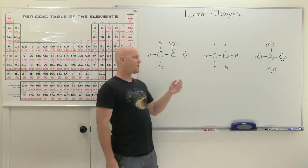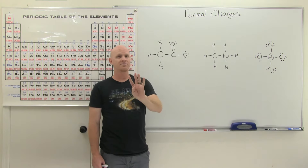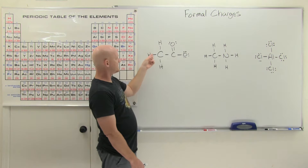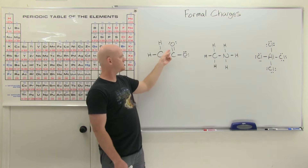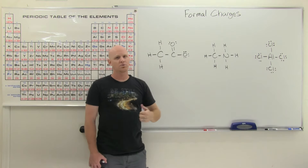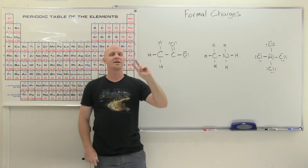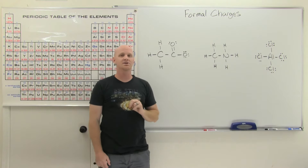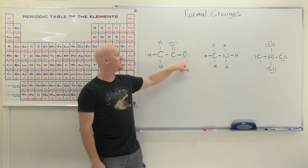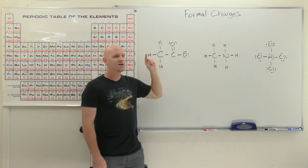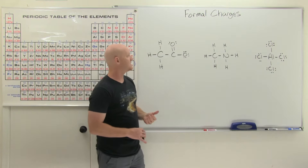Carbon has four valence electrons, so it's four short of a filled octet and typically wants to make four bonds — and making four bonds here, it's not going to have a formal charge. Same thing with this carbon: four bonds, no formal charge. Now oxygen has six valence electrons, two short of a filled octet, so you typically see oxygen making two bonds — like this one right here. But this other oxygen has only one bond, and that should clue you in that it's probably going to end up with a formal charge.